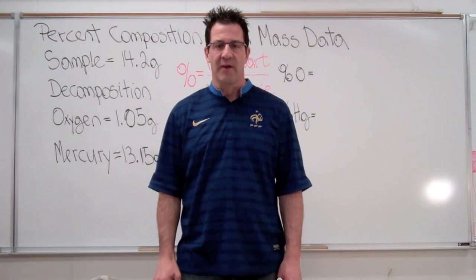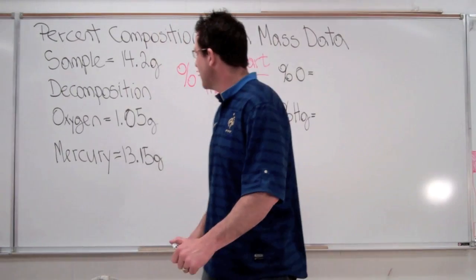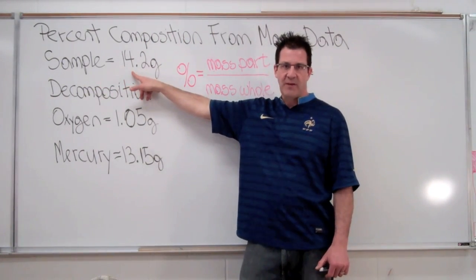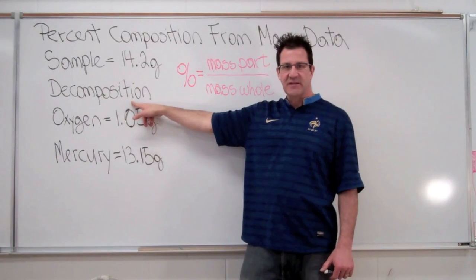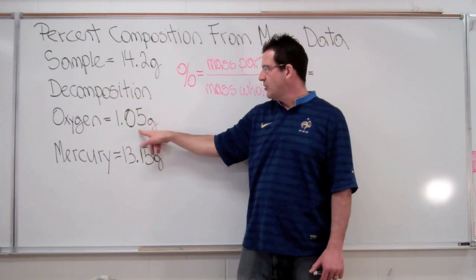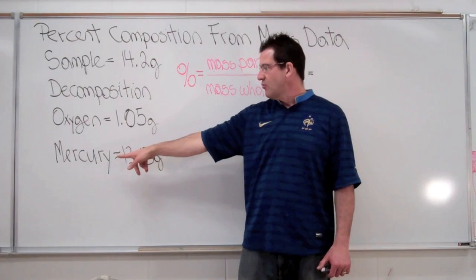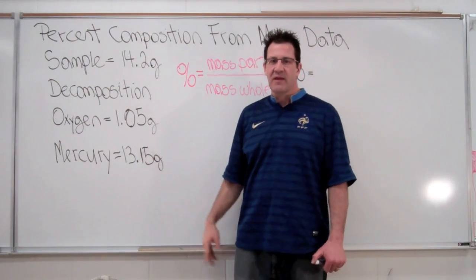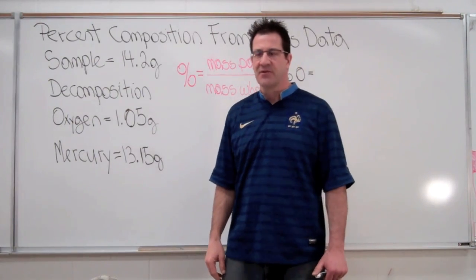This might be the mass data that you might get out of your mass spectrometer, but you can see here we have a sample that had a total mass of 14.2 grams. We decomposed that sample and we got oxygen and mercury from that sample. We got 1.05 grams of oxygen, we got 13.15 grams of mercury, and therefore we can now calculate the percent composition.